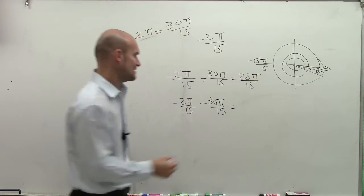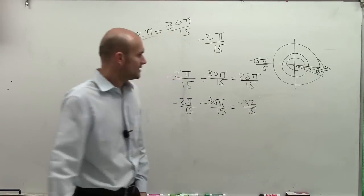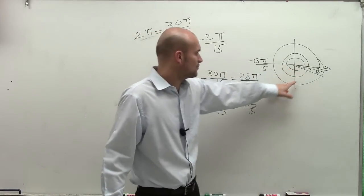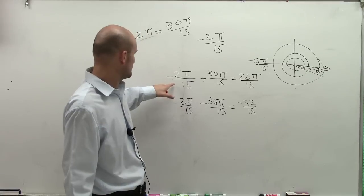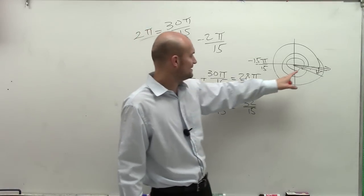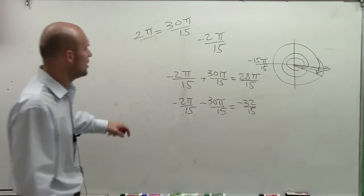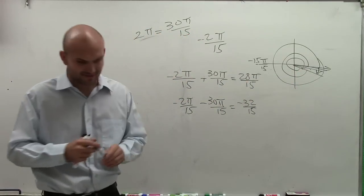Here, I'm going to subtract, and I'll get negative 32 over 15. So what that means is my angle, when I do 28... that's not... negative 2, oh crap, negative is different.